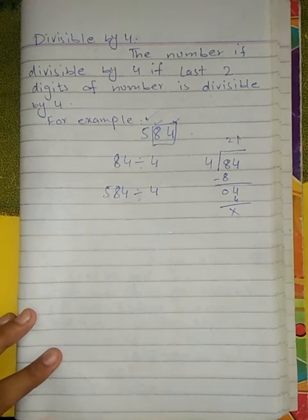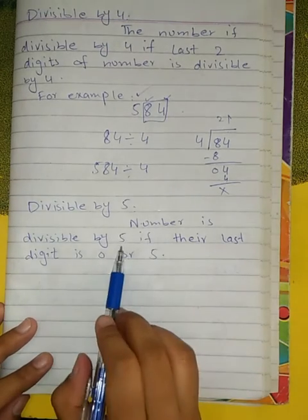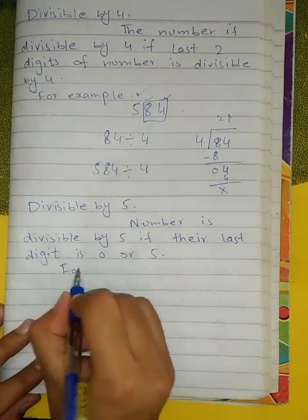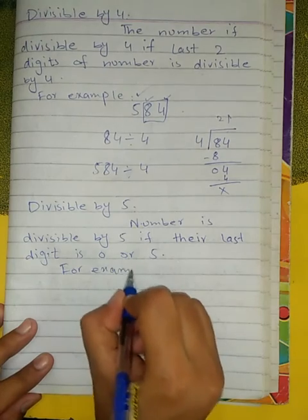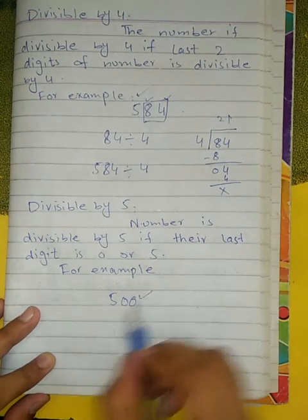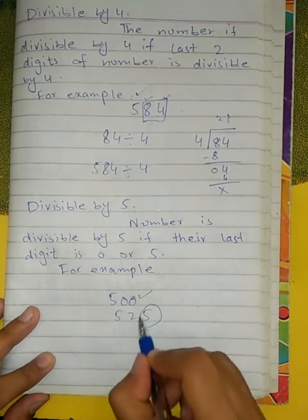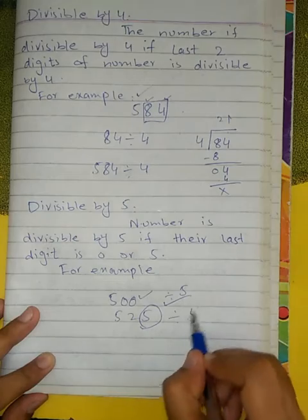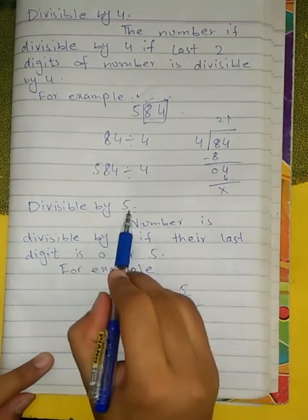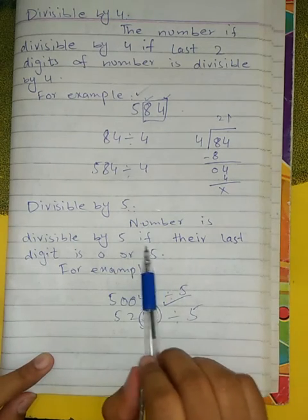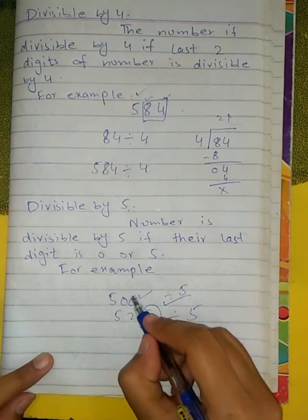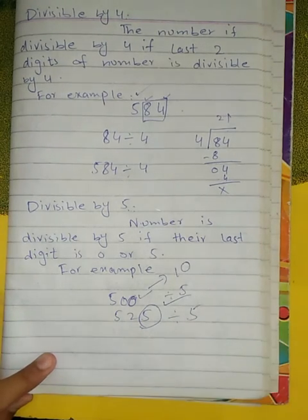Divisibility by 5: a number is divisible by 5 if its last digit at unit place is 0 or 5. Divisibility by 10: a number is divisible by 10 if its last digit is 0. If the unit place has 0, the number is divisible by 10.